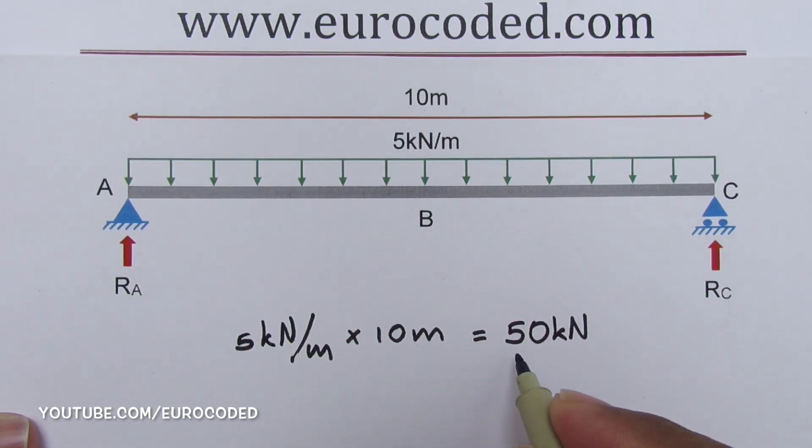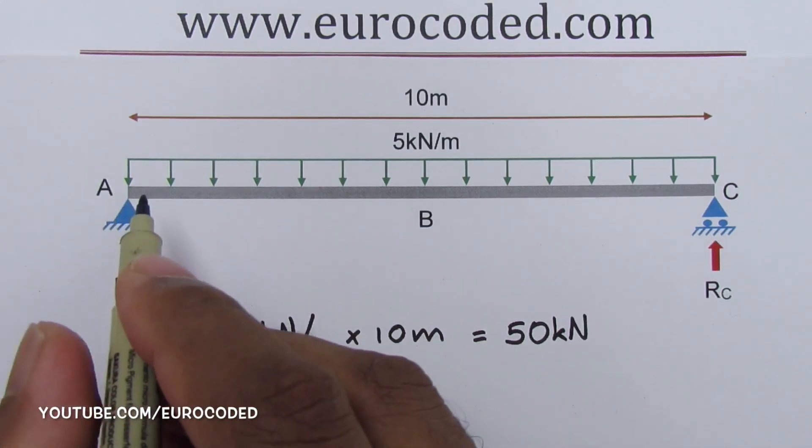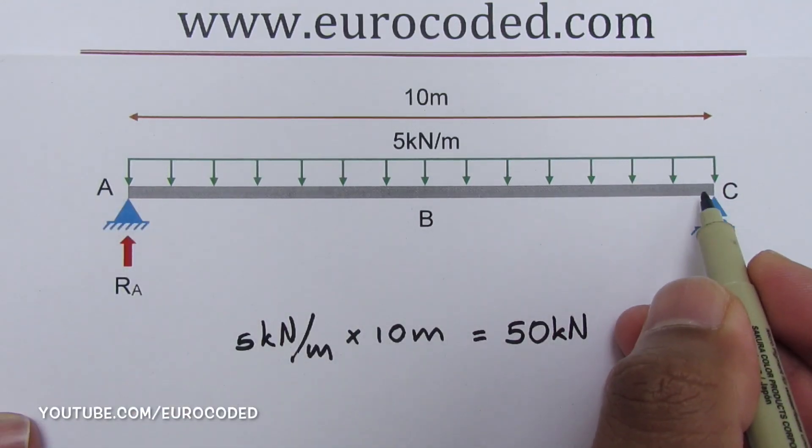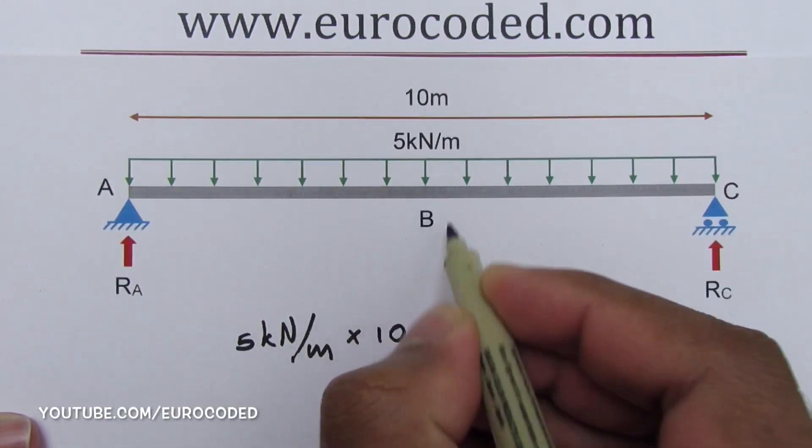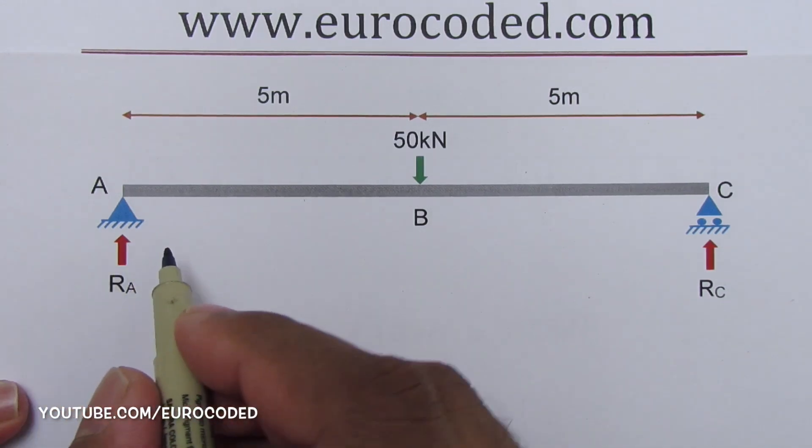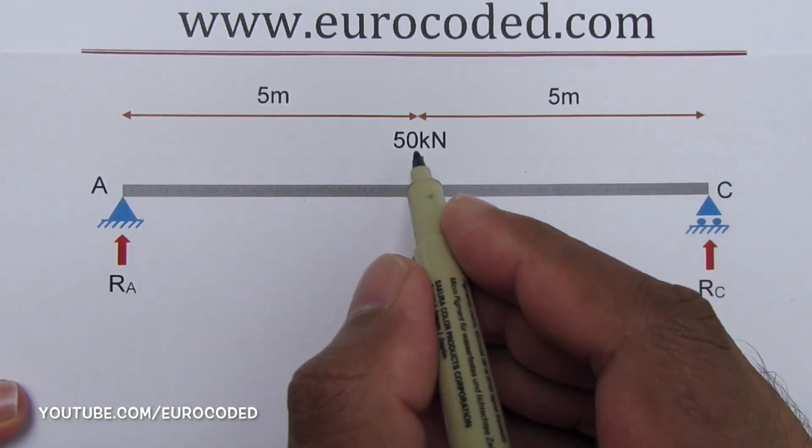Therefore, the equivalent point load would have a magnitude of 50 kilonewtons and this point load would be located at the center of AC. Let's call this point B. It is obvious that now our problem has become a simply supported beam with a point load in the middle.